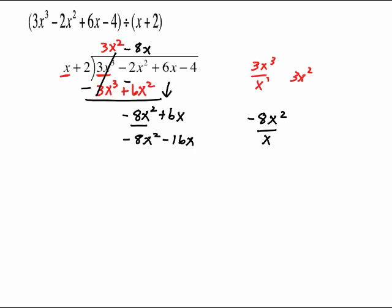We are going to draw the line, change these signs. So negative 8x squared, 8x squared cancels out. 6x, 16x is 22x. Bring down that last term of minus 4 and begin again.